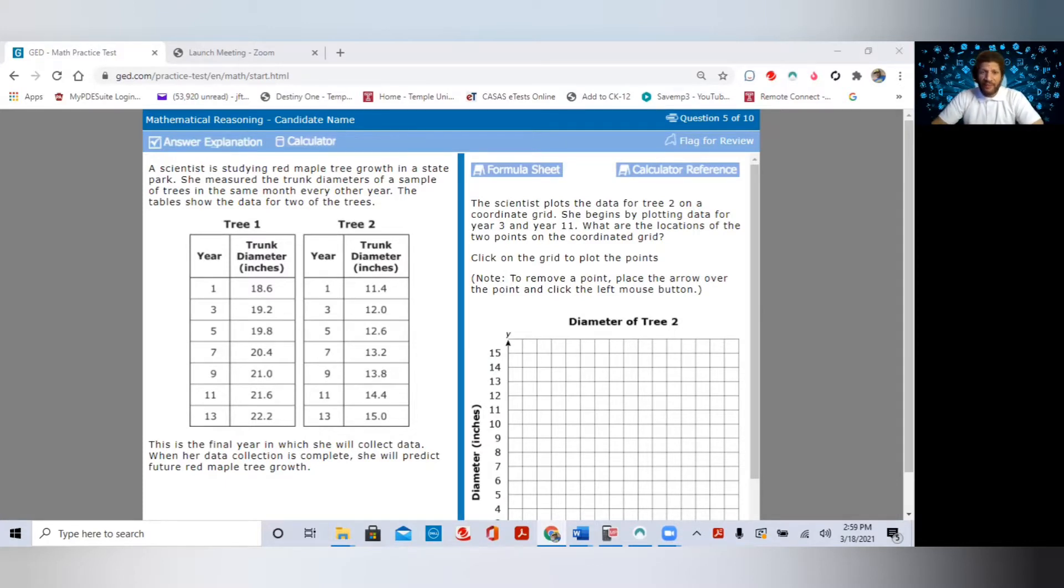A scientist is studying red maple tree growth in a state park. She measured the trunk diameters of a sample of trees in the same month every other year. The table shows the data for two of the trees. We look at the tables and we know tree one and tree two. We see that every other year is 1, 3, 5, 7, 9, 11, and 13, and we see the diameters of the trunk. This is the final year in which she will collect the data. When her data collection is complete, she will predict future red maple tree growth.